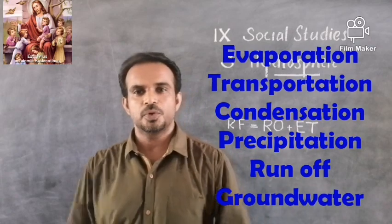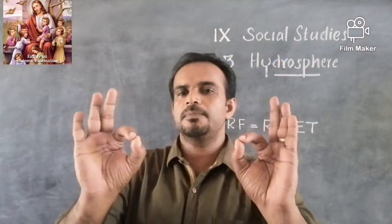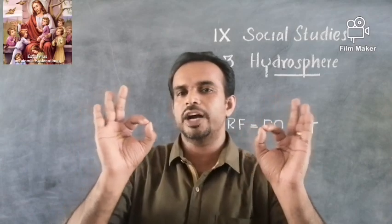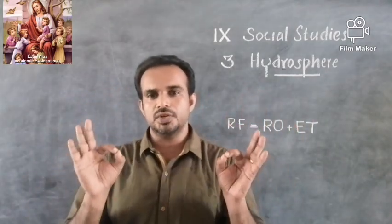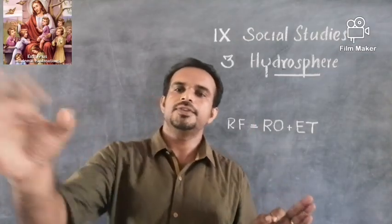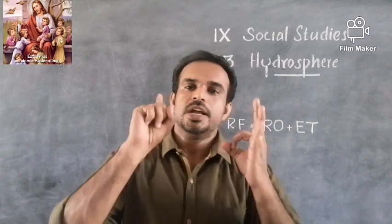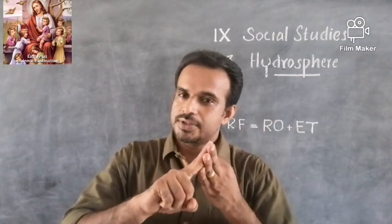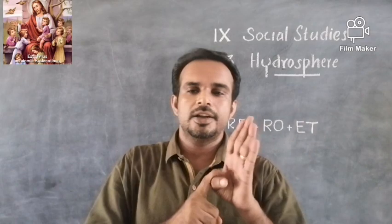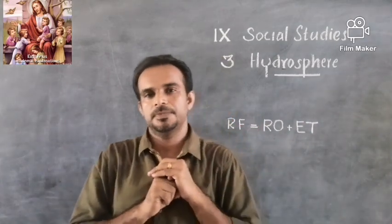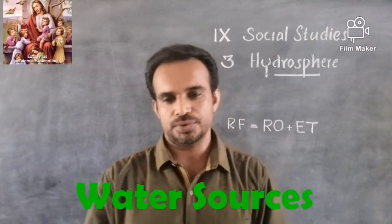None of these six stages can be avoided while discussing the hydrological cycle — the cycle will not be completed without any of these stages. Evaporation, transportation, condensation, precipitation, runoff, and groundwater are all necessary. That's all about the hydrological cycle. Next is water sources.